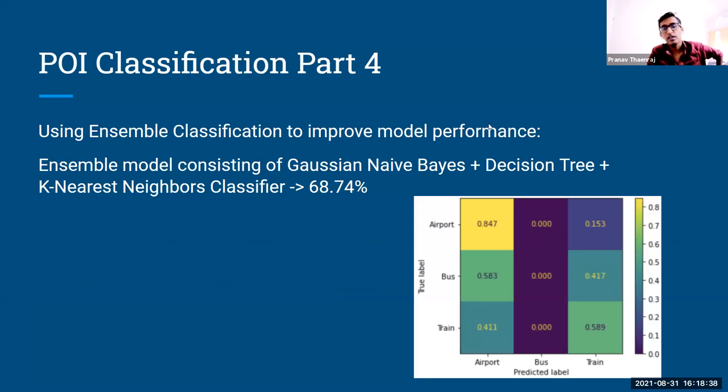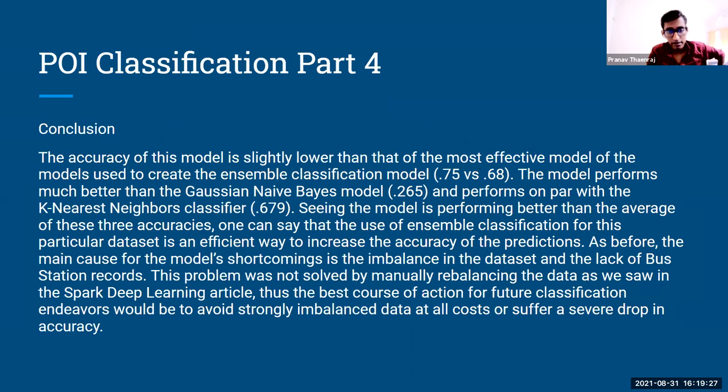So the final step that we took in this particular project was using ensemble classification to improve model performance. So what we did was we essentially took the three classification algorithms that we used in the beginning of this project, which is the Gaussian Naive Bayes, the decision tree, and the K-Nearest Neighbors. And we combined them together in an ensemble classification model. And we trained the model using the data that we have at hand, and we produced an output of about 68.74%. So this is lower than the decision tree data, but when taking into account the fact that it's taking the Gaussian Naive Bayes and the K-Nearest Neighbors into consideration, this is much better than what should have been seen. And that is a good sign. So the model performs slightly worse than the decision tree model, but better than the Gaussian Naive Bayes and the K-Nearest Neighbors. And so it's performing better than the average of the accuracies, which is a good sign.